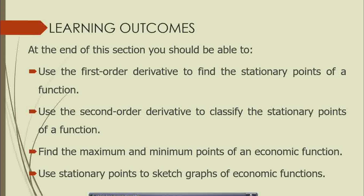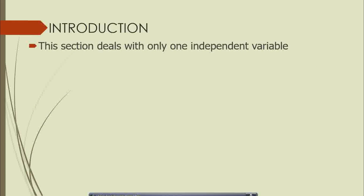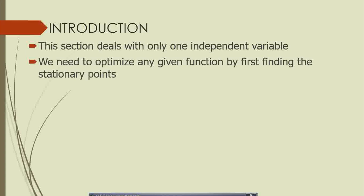Let's go through the introduction to optimization for a one variable case. We are dealing with one independent variable, meaning that for a given function — let's say y — it will be a function of x. We only have x as the only independent variable, and we want to see how x is influencing y. With x being the only independent variable, we want to determine the stationary points of any given function and be able to sketch that function.